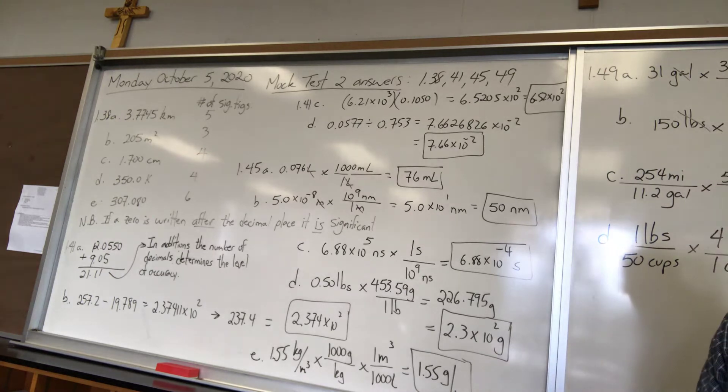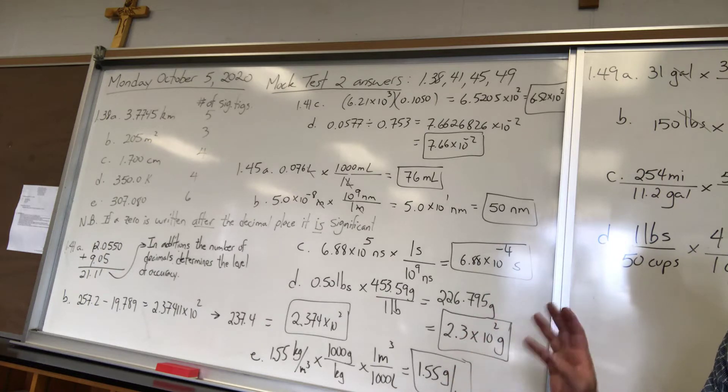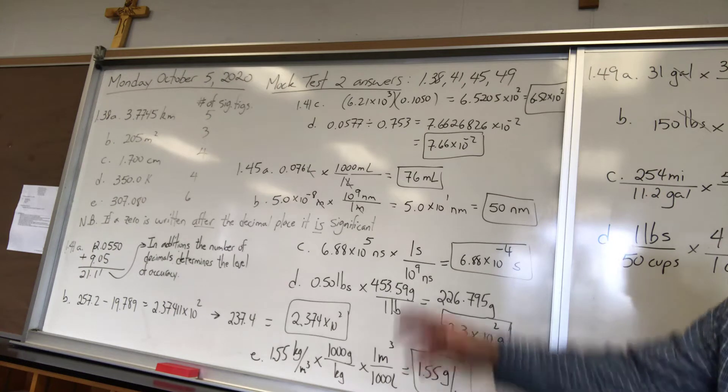And for significant figures it simply means how many numbers are quoted in the value. So 3.7745 gives you five significant figures. With significant figures remember that decimals are not counted. If there's a zero between the decimal and other numbers then you don't count them. There's none like that in here so all the answers are pretty straightforward.